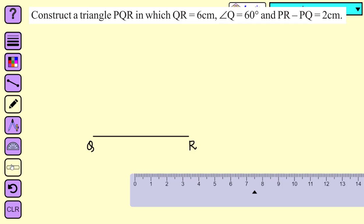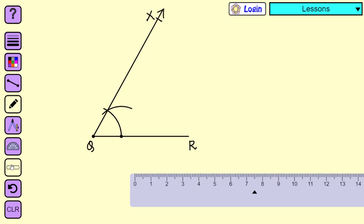We have to make an angle which measure is 60 degrees at point Q. The measure of angle XQR is equal to 60 degrees.